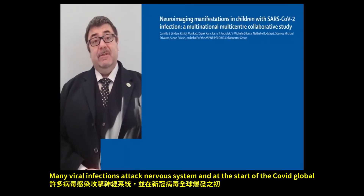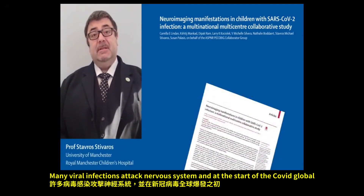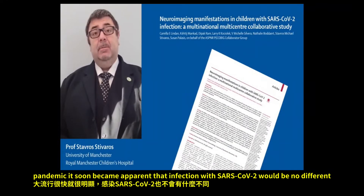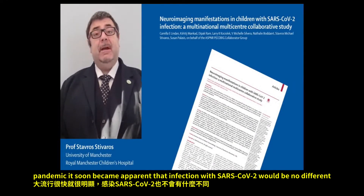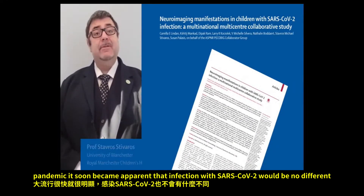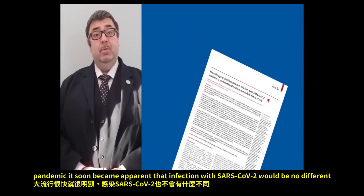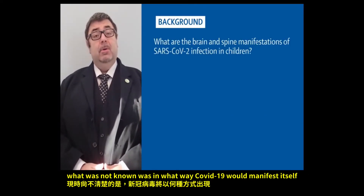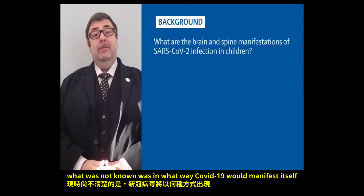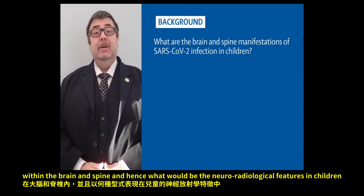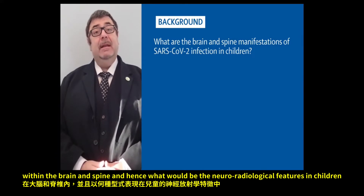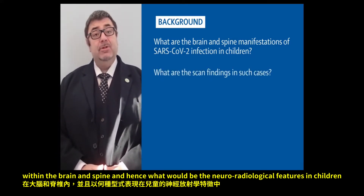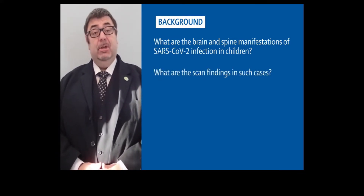Many viral infections affect the nervous system, and at the start of the current global pandemic, it soon became apparent that infection with SARS-CoV-2 would be no different. What was not known was in what way COVID-19 would manifest itself within the brain and spine, and hence what would be the neuroradiological features in children.